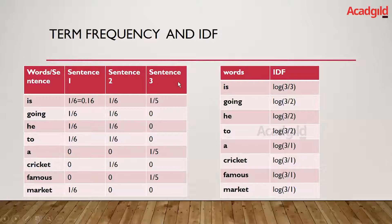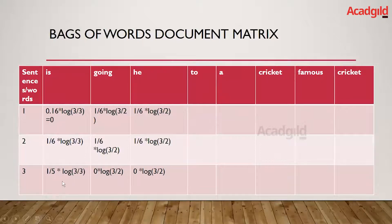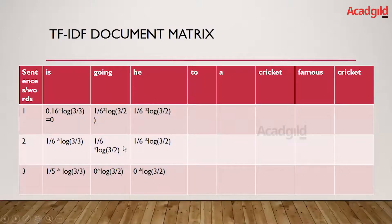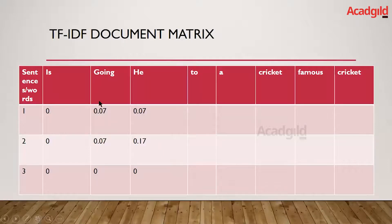For sentence three, the TF of 'is' is 1/5 and the IDF is log(3/3), so 1/5 × log(3/3) becomes zero. Please fill in all the empty values yourself for better understanding. After computing all values in the TF-IDF document matrix, you will see values like 0.007, 0.07, and 0.17.